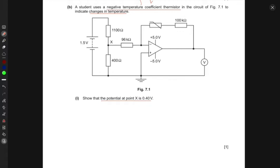The potential at point X is the input potential, V_in. Because this is earthed, V_in is coming through 400 ohms, and here we have 1100 ohms. V_in equals the battery potential, 1.5 times 400 ohms, divided by the sum of these two resistors in series, 1100 plus 400 ohms. This gives 0.40 volts.